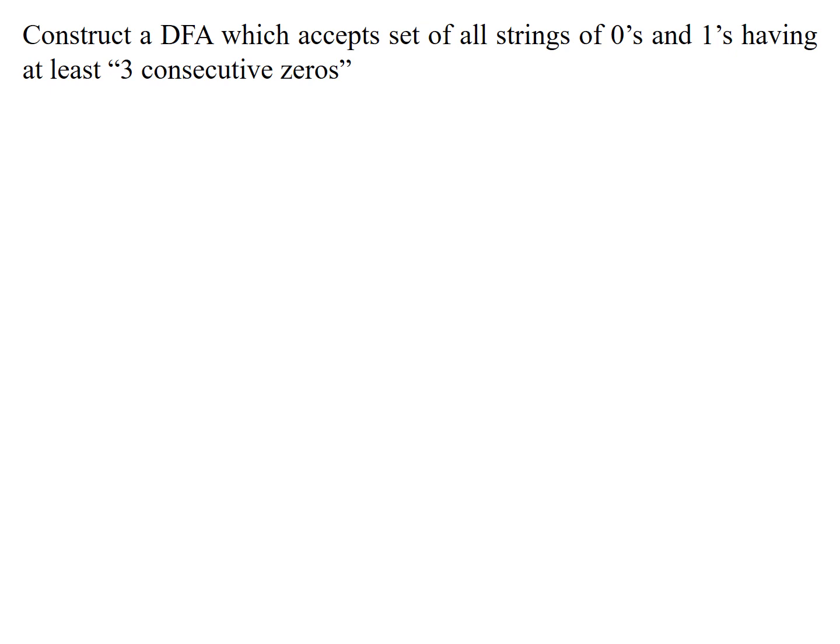Let us move to the next problem. We will demonstrate how to construct a DFA. The problem statement is: construct a DFA which accepts the set of all strings of zeros and ones having at least three consecutive zeros. Three consecutive zeros is the important condition. The input alphabet is zeros and ones, but any string generated must contain at least three consecutive zeros.